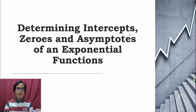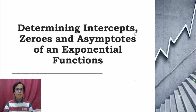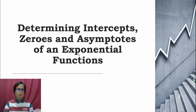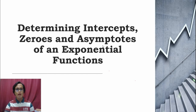When we say intercepts, it is a point where the graph will cross the x-axis and the y-axis. In the case of the x-axis, that is called the x-intercept; in the case of the y-axis, that is called the y-intercept. The zero of an exponential function is the value of x that would equate the exponential function to zero. And the asymptote is the line in which the graph will approach closer and closer but will never cross.